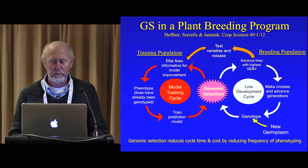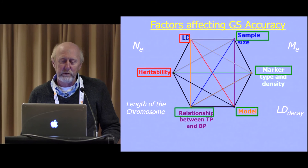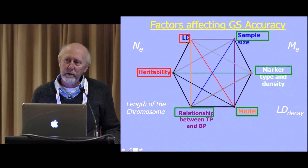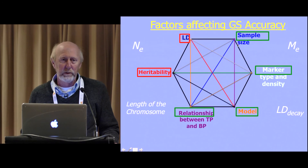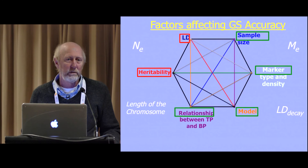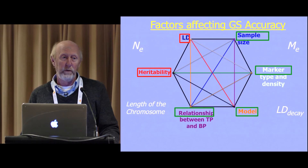There are a lot of factors that affect genomic selection accuracy. Prediction accuracy is affected by linkage disequilibrium — recall that we assume at least one molecular marker in LD with every gene affecting the trait. If you have low LD and low marker density, you're probably going to miss some of those genes. Sample size is important because it determines your effective population size, which affects LD. When you have a larger effective population size, you have lower linkage disequilibrium. Marker type and density matter because you want good distribution of markers across the entire genome, and marker type affects cost.